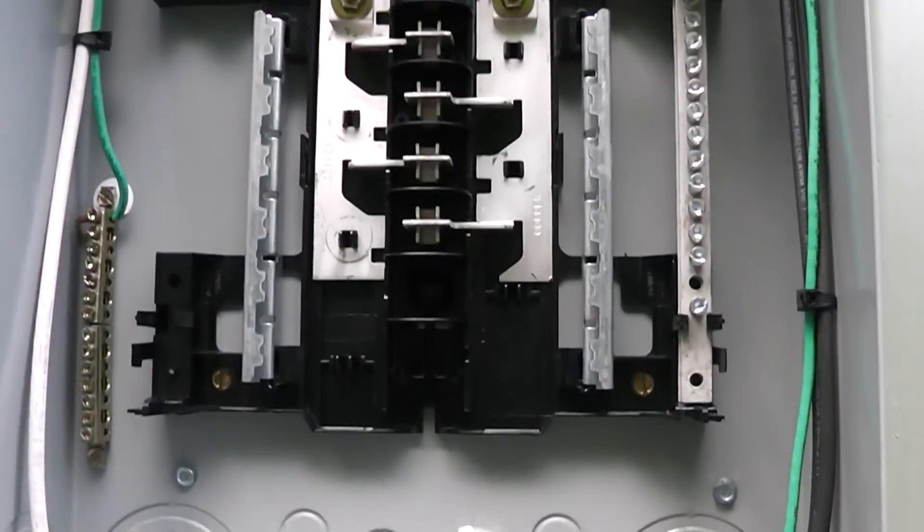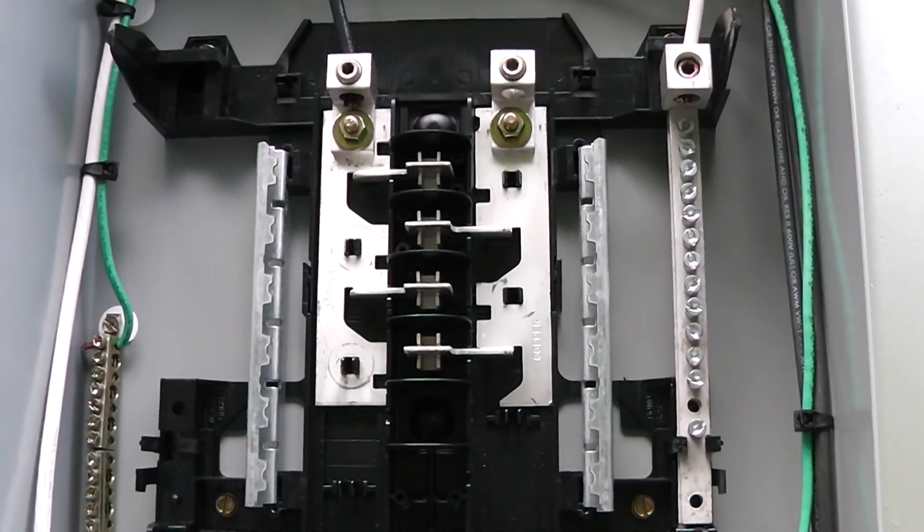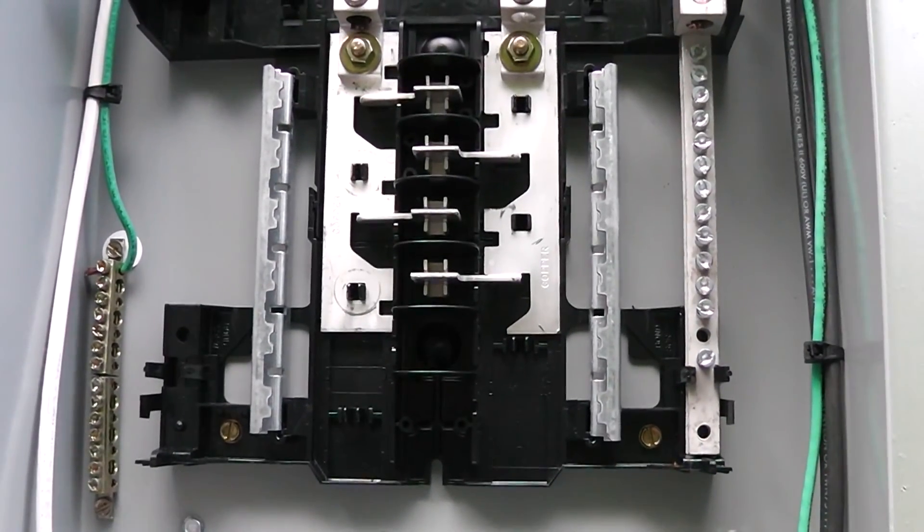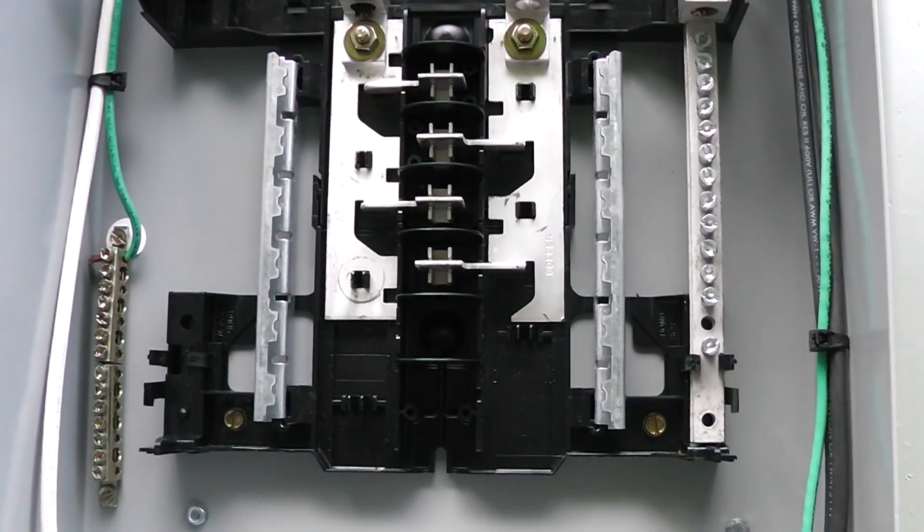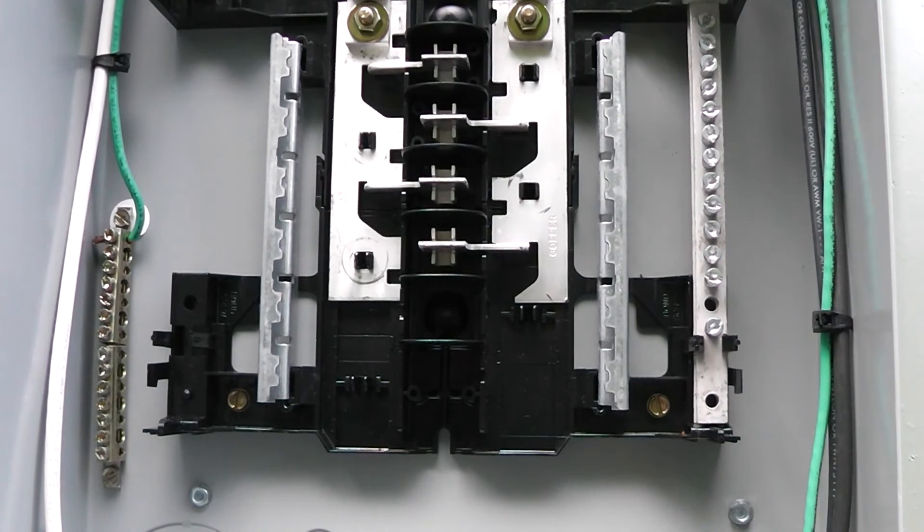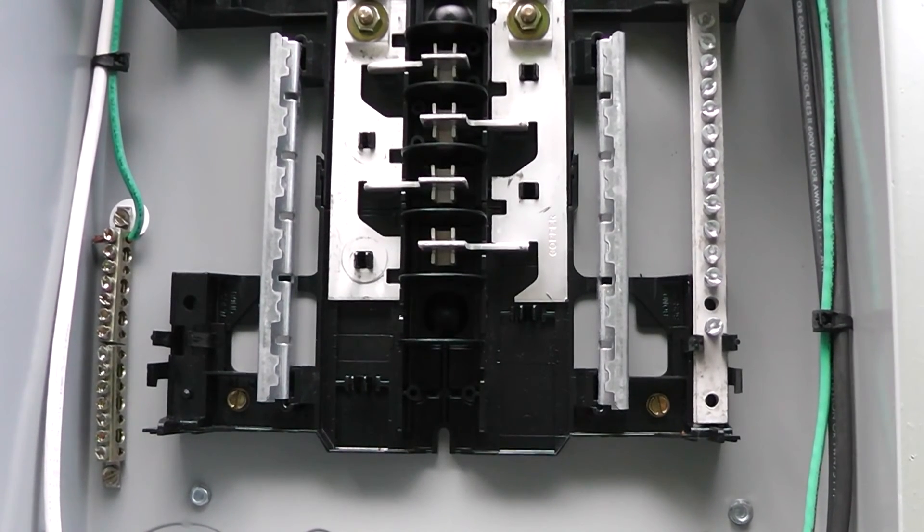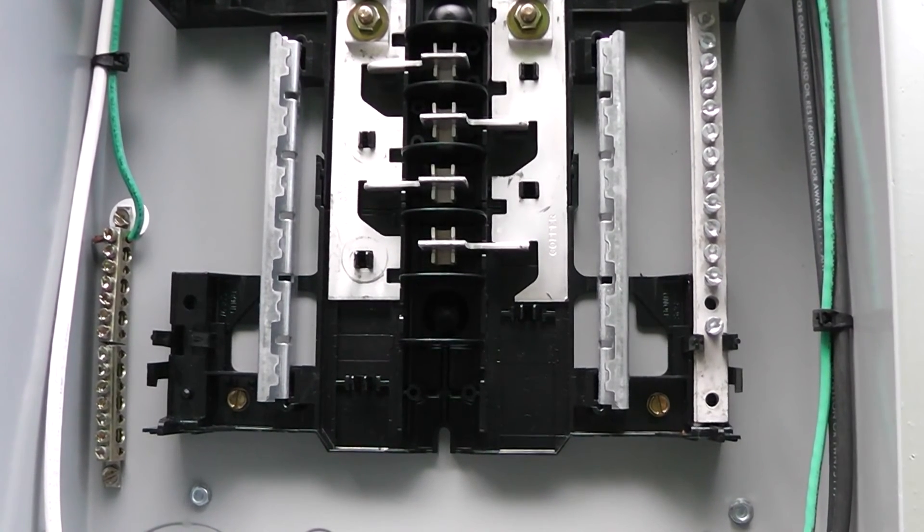So I think if you address those problems in your sub-panel and do what we did here in the beginning of the video, separate the grounds, the neutrals, and put in a grounding electrode conductor, I think you'll be good to go. If you have any more questions, send me an email.